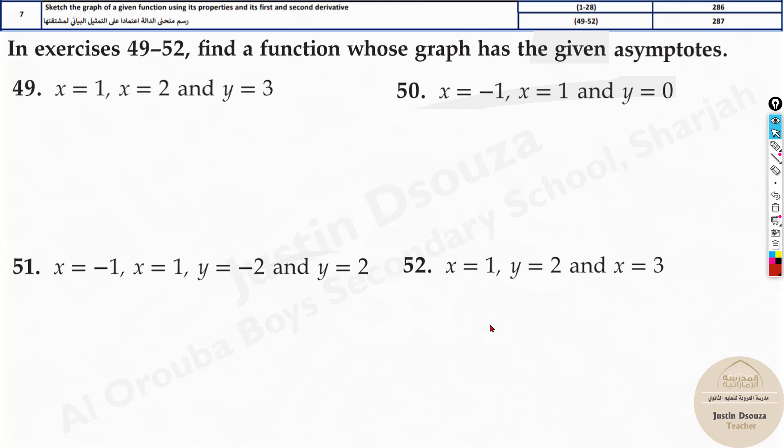Now if we move to the last four questions of this question number seven, we can see that there is a different type of problem. We need to write a possible function for the given asymptotes.